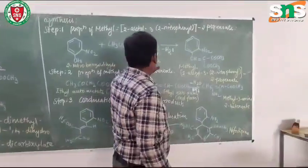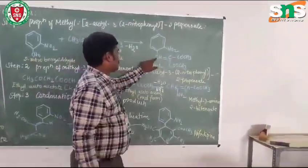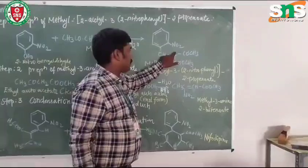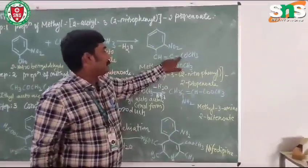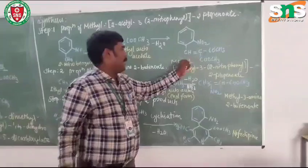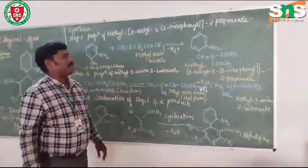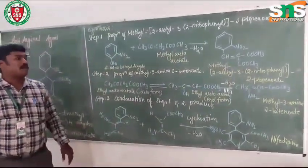So here, the water molecule is eliminated. That is CH double bond C-COO-CH3 and CO-CH3. The remaining group will be attached to that. This is the structure of ethyl 2-acetyl-3-(2-nitrophenyl) propenoate.